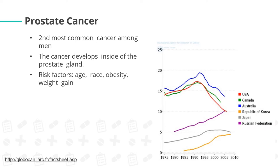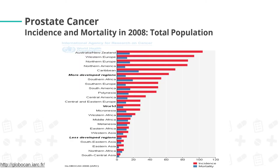Next is prostate cancer, the second most common cancer among men. Cancer develops inside the prostate gland and risk factors are age, race, obesity, and weight gain. Australia has the highest incidence from 1975 to 2005. Doctors diagnose prostate cancer through tests like acid phosphatase for chemistry and prostate-specific antigen or PSA in the immunology-serology section of the laboratory. Australia or New Zealand has the highest incidence, and the Caribbean has the highest mortality rate for prostate cancer.